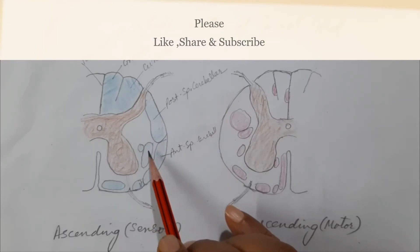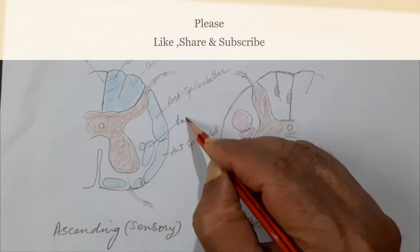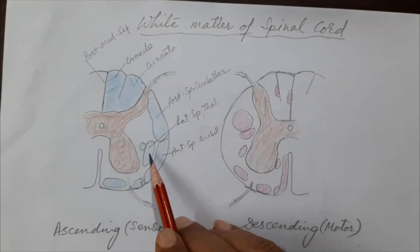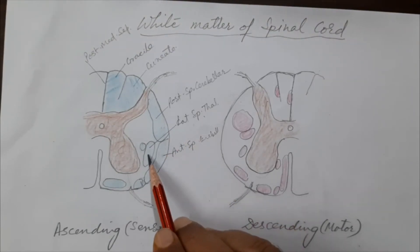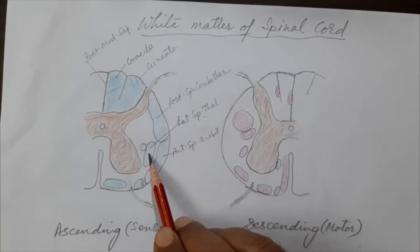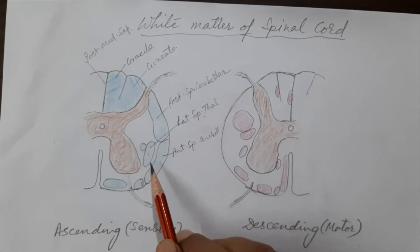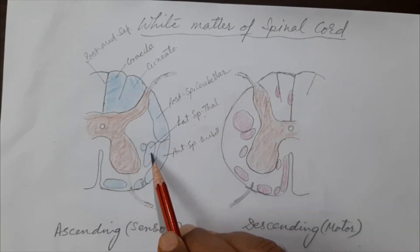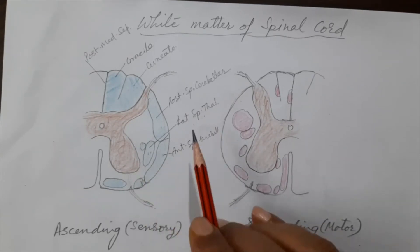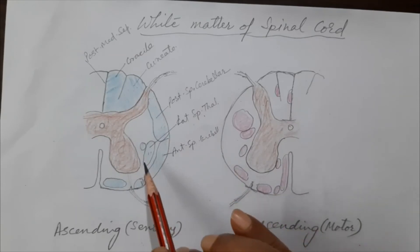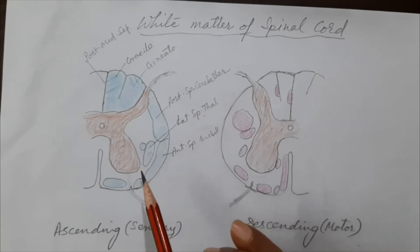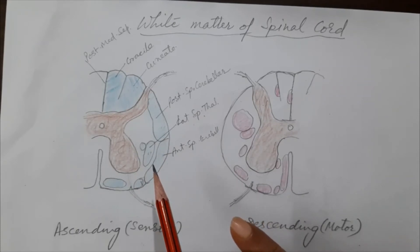Another tract in the lateral funiculus is the lateral spinothalamic tract — starting from various levels of the spinal cord and terminating in the thalamus. Its function is to carry pain and temperature sensation (and crude touch) from the opposite side of the body. The fibers cross to the opposite side, which is why the sensation is from the contralateral side — you will learn why in physiology.